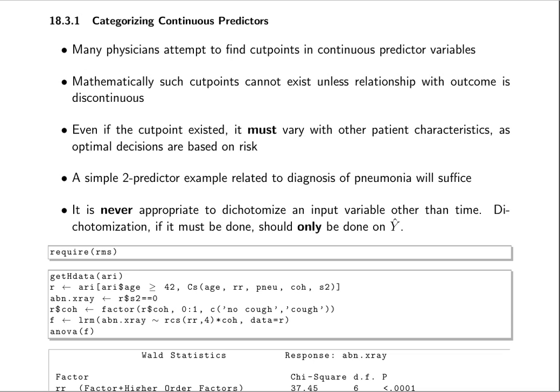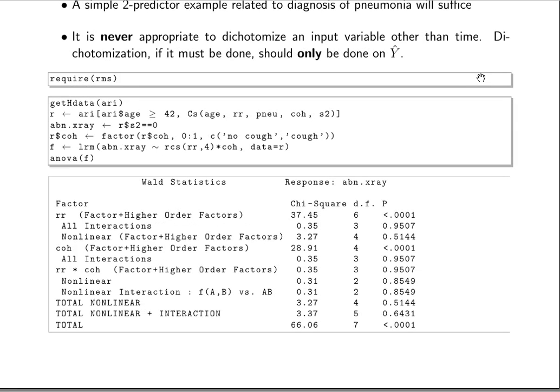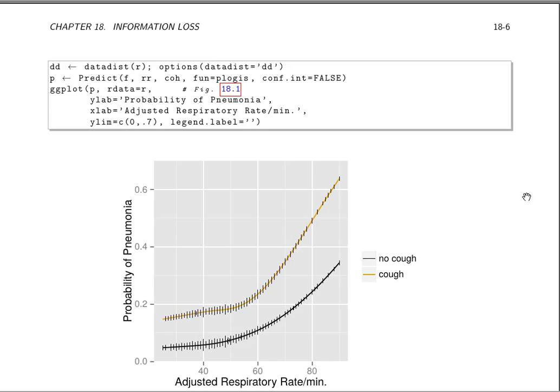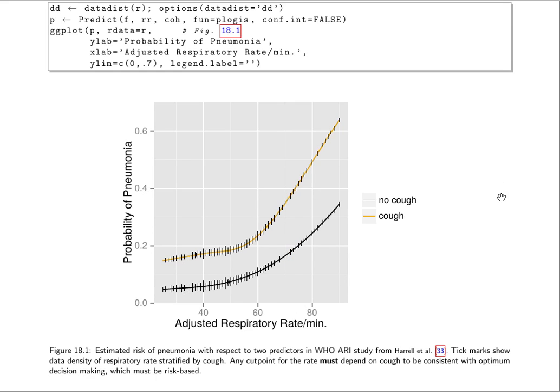So let's look at the World Health Organization data set and consider the relationship between respiratory rate and whether the infant has a cough and the risk of pneumonia. Pneumonia here was defined as four radiographers reading the same chest radiograph and all four of them determining that the image was consistent with pneumonia.